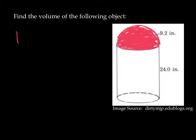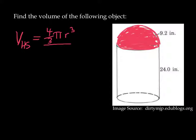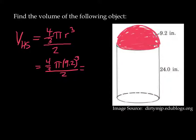Let's deal with the hemisphere first. The volume for the hemisphere — we have to look that formula up. A sphere is 4/3 times pi times r cubed. And since it's a hemisphere, we divide by two. So that gives us 4/3 times pi times 9.2 cubed, all divided by two. If you type that into your calculator, you should get 1,631 cubic inches, rounding up.